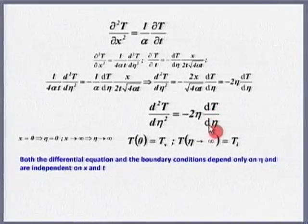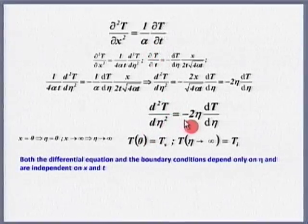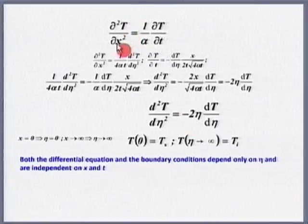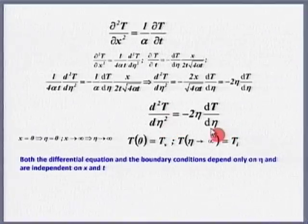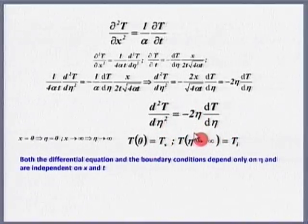If I substitute what I have found into ∂²T/∂x² and (1/α)(∂T/∂t) and simplify, I get d²T/dη² = −2η · dT/dη. Now you see the partial differential equation has been converted into an ordinary differential equation. Earlier temperature was a function of x and t; now it is only a function of η, and solving this equation becomes very easy.